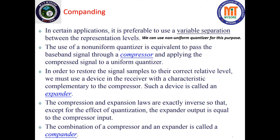In a non-uniform quantizer you are going to have fewer steps, thereby saving the bandwidth. Essentially, this non-uniform quantizer is equivalent to passing a baseband signal through a compressor and applying the compressed signal to a uniform quantizer. The compressor limits the amplitude level of the signal, and then the signal is applied to a uniform quantizer. At the receiver end you need a circuit called an expander, which restores the signal samples to their correct relative levels.